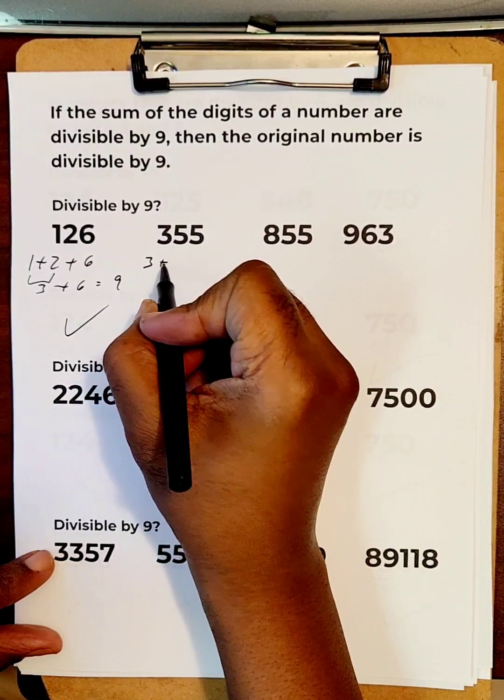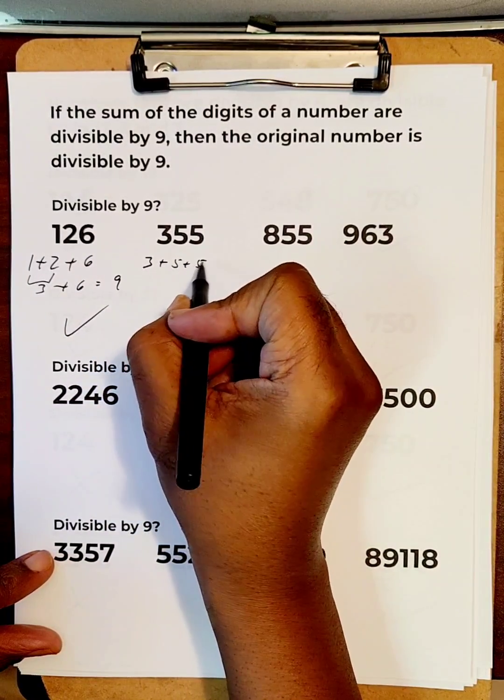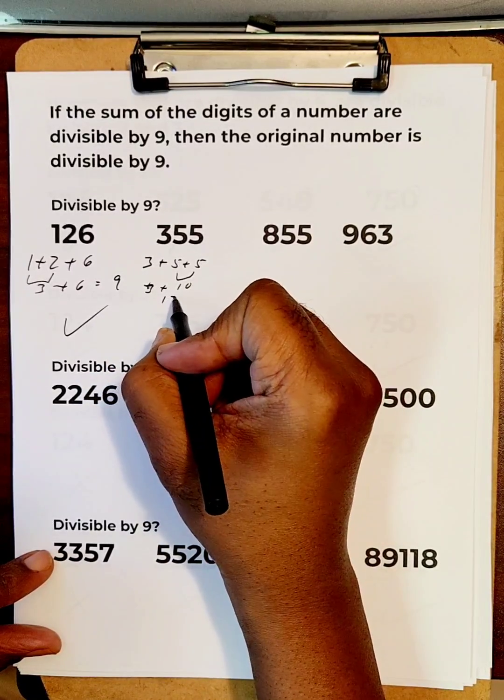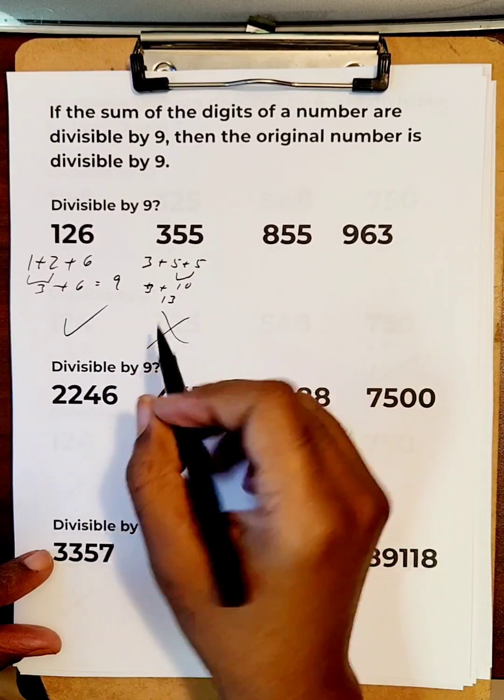We got 355, so 3 plus 5 plus 5. 5 plus 5 is 10, plus 3 more make 13, so that's not in the 9 timetables.